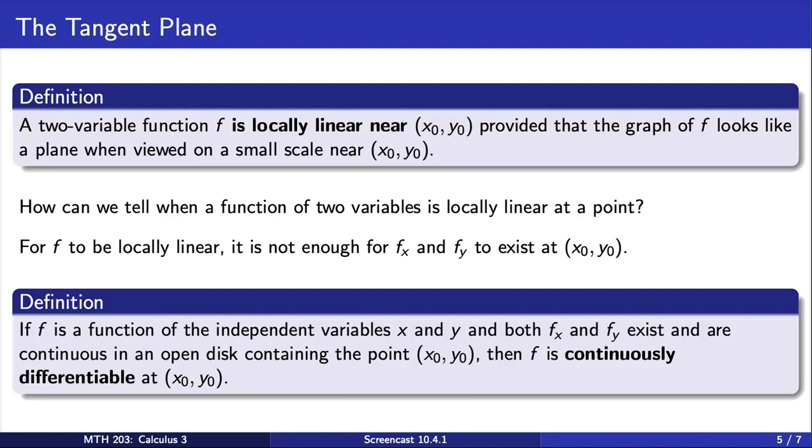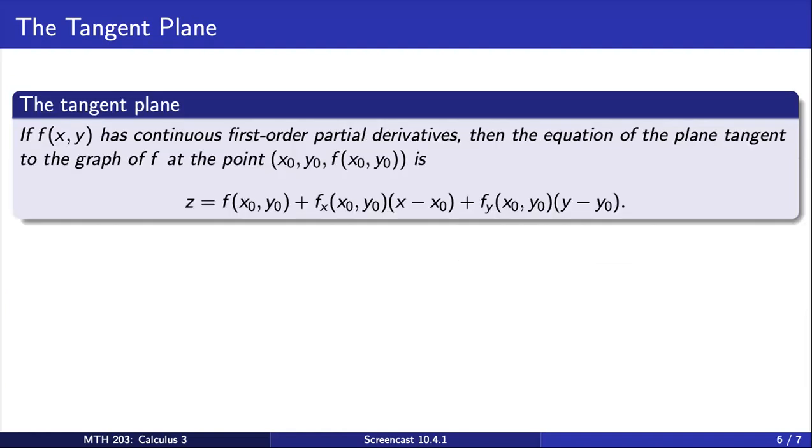We are now ready to state the general formula for a tangent plane. If f has continuous first-order partial derivatives, then the equation of the plane tangent to f at the given point has the following equation. Note that this equation relies on the equation of a plane formula we looked at in section 9.5.